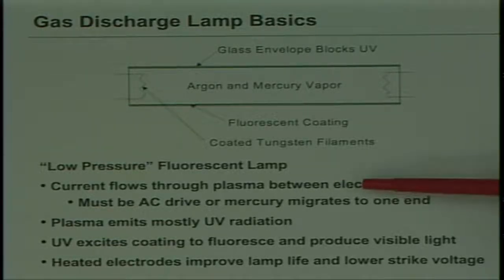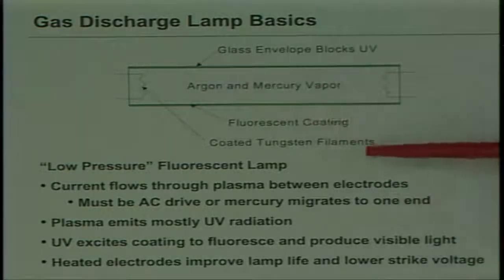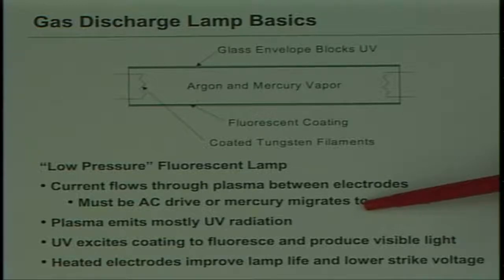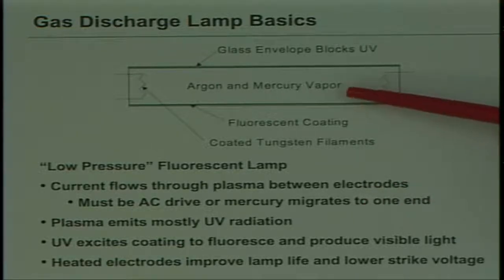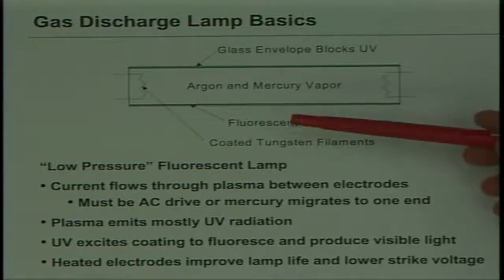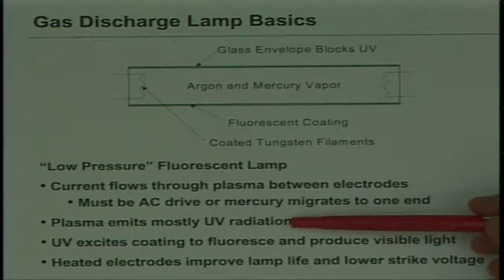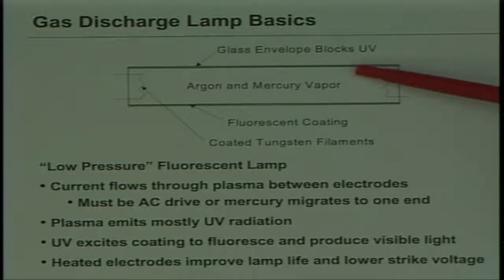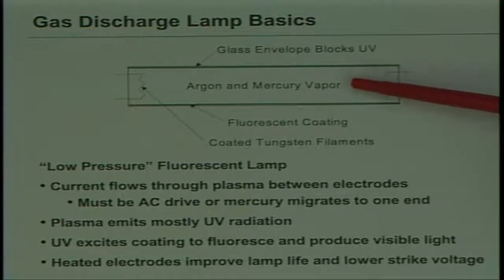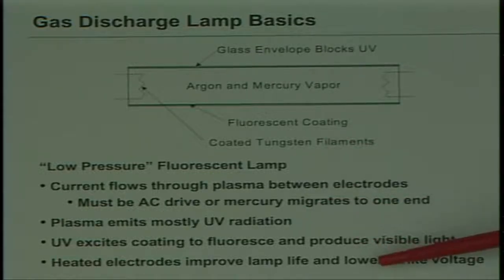When you start these lamps without preheat of the filament, you sputter the material, the tungsten, and you get blackening on the ends of the lamps. Current flows between these two electrodes, basically in a plasma inside the tube. The drive has to be purely AC. If you try to drive this with DC, all the mercury gets pumped to one end of the lamp and it turns into a rectifier and you can't light it anymore. The glass envelope doesn't entirely block UV but it certainly attenuates it. The heated electrodes lower the strike voltage, making the power supply easier, and they also improve lamp life by preventing sputtering.